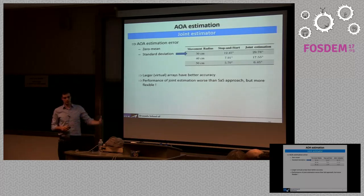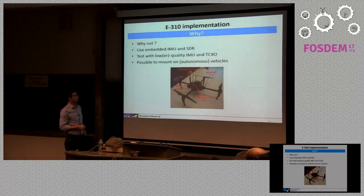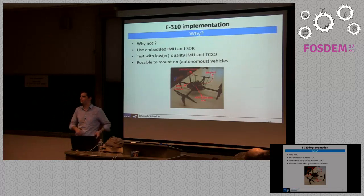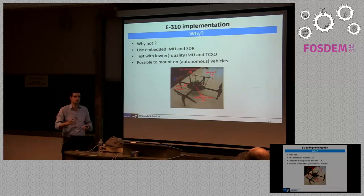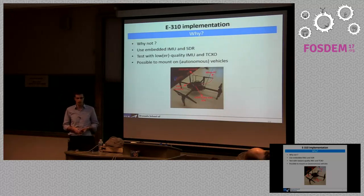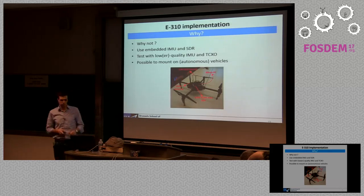We are currently porting this to the E310 USRP — a small platform with an embedded processor. This has an embedded IMU of much lower quality than what we used previously, allowing us to assess performance with a phone-grade IMU. It also allows us to use a worse-quality oscillator. Eventually, we want to put this on a quadrotor that one of our students is working on, where the SDR controls both the quadrotor and the radio aspects.